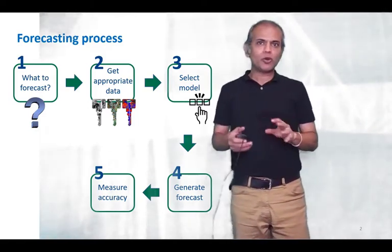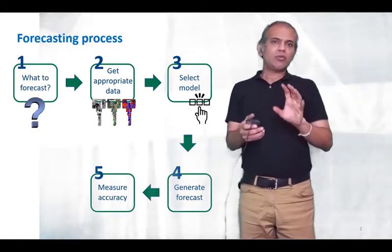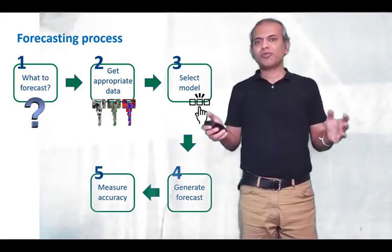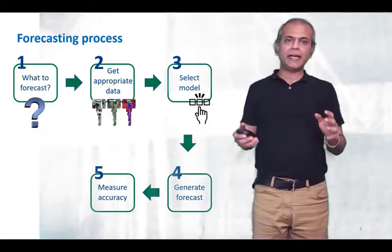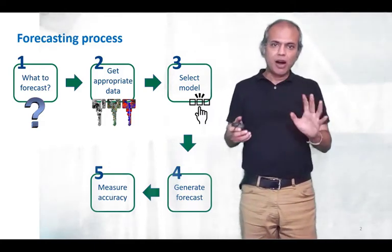The first step we talked about what to forecast, the span and scope. In the second video we talked about getting appropriate data and we saw the within firm and across firm problems for getting appropriate data. In this particular video I'm going to talk about selecting the right forecasting model.